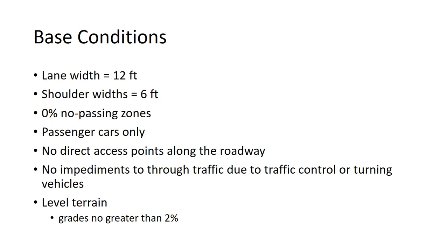Base conditions represent the perfect situation for maximum flow. Lane width is 12 feet, shoulder width is 6 feet. In the base condition, you can always pass — 0% no-passing zones, meaning there is always a dashed center line, never a solid line. Only passenger cars, no heavy vehicles. No driveways, no impediments to through traffic, no stop signs or signals, and level terrain with all grades less than 2%. These conditions give us the best level of service.